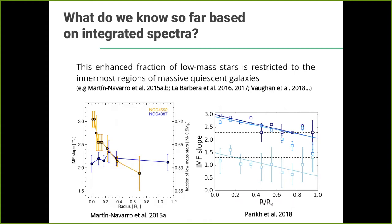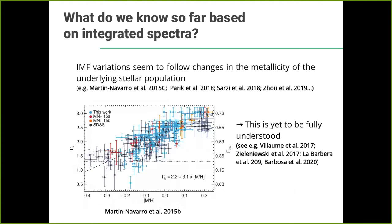This radial concentration seems to be a fairly robust result for the majority of massive galaxies. On the left I'm showing a figure from 2015 with one massive galaxy in particular where the enhanced fraction of low mass stars — the bottom-heavy IMF — is concentrated in the central 0.2 effective radii. On the right, a more recent figure from Taniya based on MaNGA also finds systematic radial gradients in the IMF of massive galaxies.